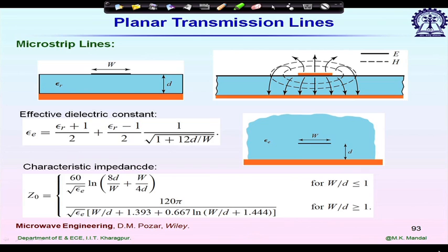Another important application is the tank circuit used to determine the frequency of an oscillator. Let's first see what effects we face at millimeter wave frequencies for a microstrip line resonator. We are going to consider one microstrip line of length λg/2. Let me draw the top view.